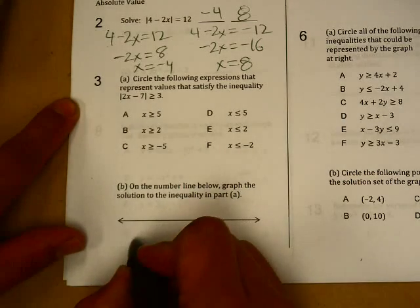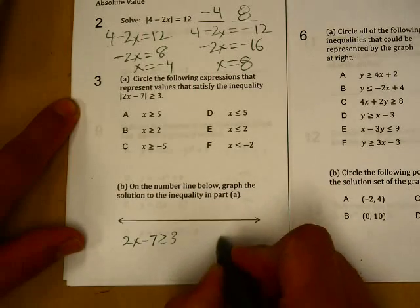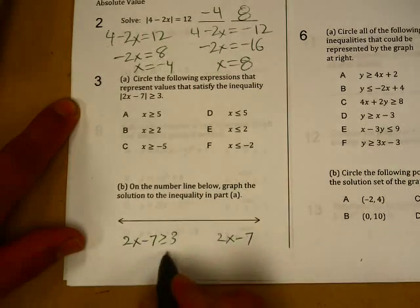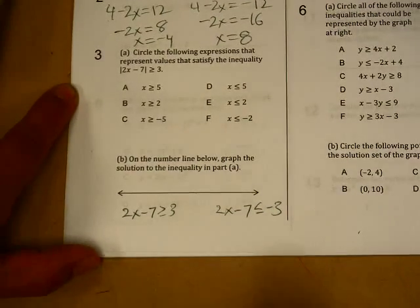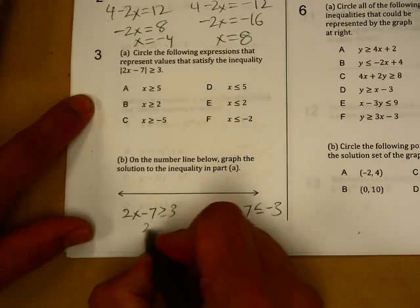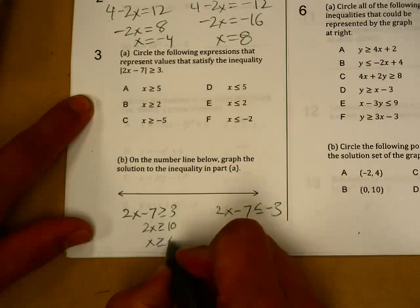So we should start with 2x minus seven is greater than or equal to three, and 2x minus seven is less than or equal to negative three. Solve each one of these separately. Add seven, seven.